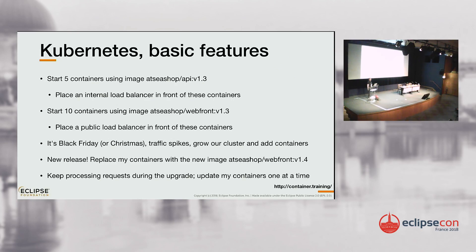Here are a couple of things you can do with Kubernetes. You can run five instances, five containers of an application, and automatically place a load balancer in front of those five containers. You can also start ten containers alongside, without having to worry about which machine they run on, and again place a load balancer — this time a public one, available from the internet. If it's Christmas and you need to grow your cluster fast to handle more traffic, you can do that very easily. And if you have a new release of your front end and want to deploy version 1.4, Kubernetes handles that with rolling updates, keeping the old version processing requests while the new one is being deployed.